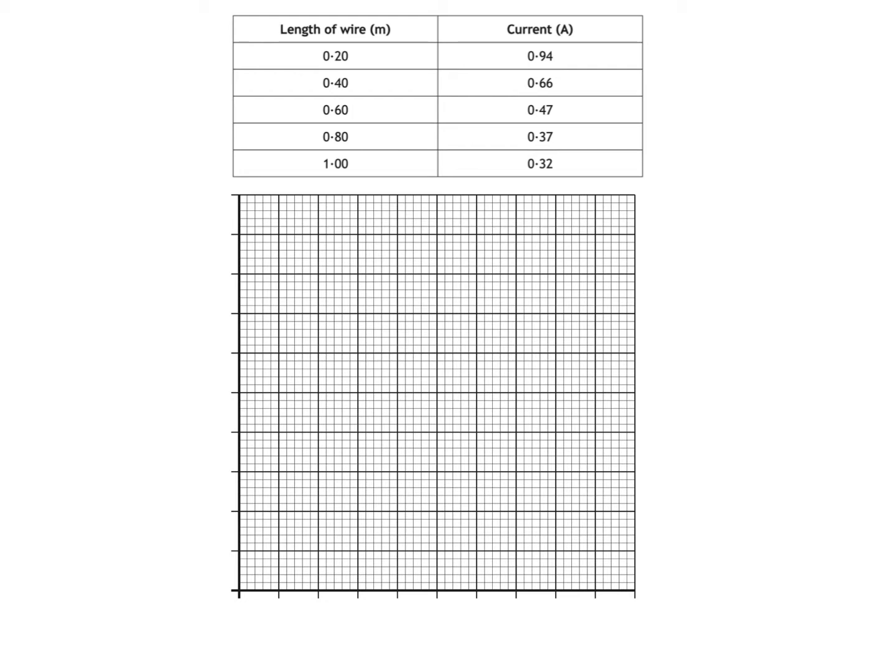Normally you would put the independent variable on the x-axis and don't forget the units. The variable that's changing as a result is called the dependent variable, current in this case.